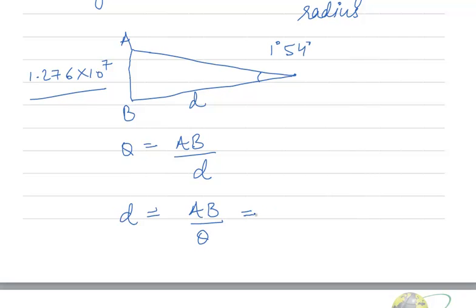Now what is AB? AB is 1.276 × 10^7 meters. And what is theta? We have to convert 1 degree 54 minutes into radians.